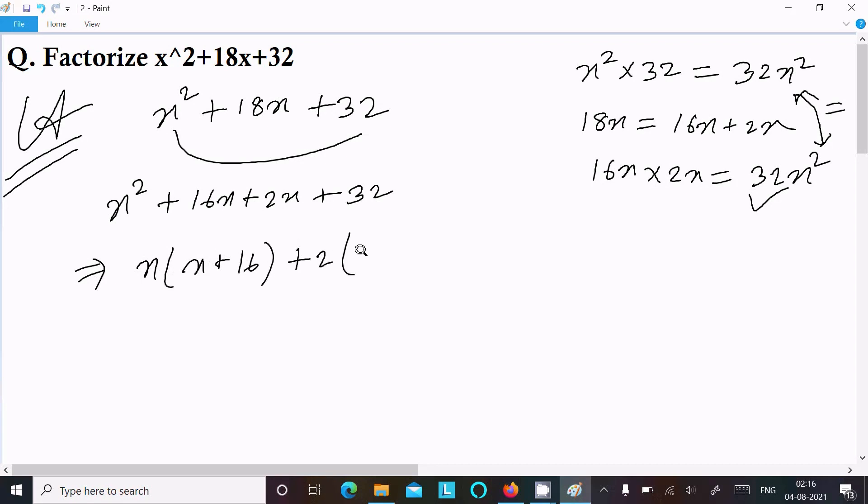x plus 16 is the common part here. So x plus 16 bracket x plus 2. So this is the factorization of x squared plus 18x plus 32.